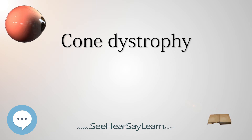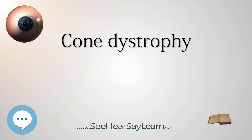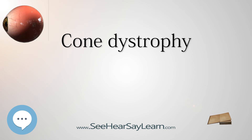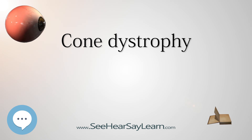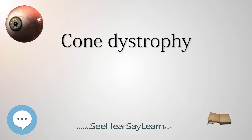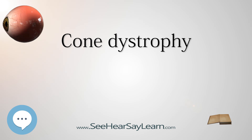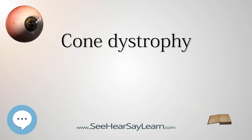Abnormal cone function on the ERG is indicated by a reduced single flash and flicker response when the test is carried out in a well-lit room, photopic ERG. The relative sparing of rod function in cone dystrophy is evidenced by a normal scotopic ERG, i.e., when the test is carried out in the dark. In more severe or longer-standing cases, the dystrophy involves a greater proportion of rods with resultant subnormal scotopic records. Since cone dystrophy is hereditary and can be asymptomatic early on, ERG is an invaluable tool in the early diagnosis of patients with positive family histories.